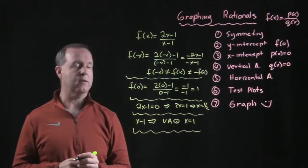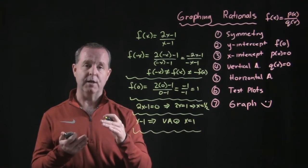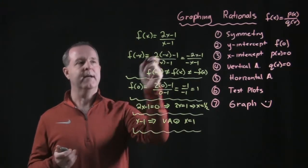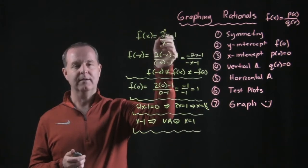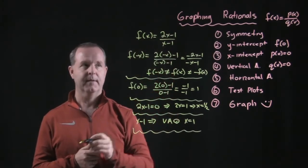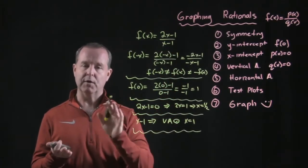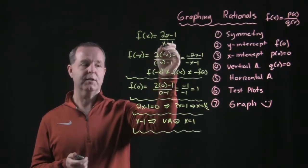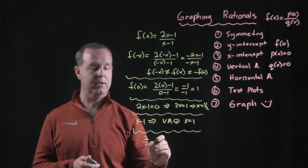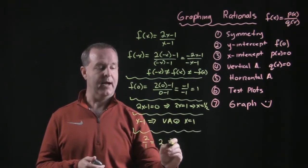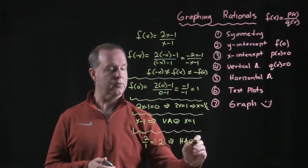Next, we have horizontal asymptotes. How did we determine? We looked at the exponent, or the highest exponent in the numerator, related to the highest exponent in the denominator. Here, they're both ones, which means they match. So then we take the ratio of their coefficients, which is two over one, which equals two. That tells me now that I have a horizontal asymptote at the line y equals two.